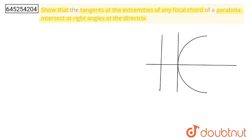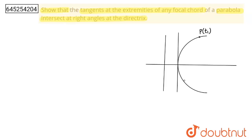Now what I am going to do is take two points which are endpoints of the focal chord. First is P(t₁) and second is Q(t₂). These both are endpoints of the focal chord. So this is our focus at (a, 0) to which this chord is attached.